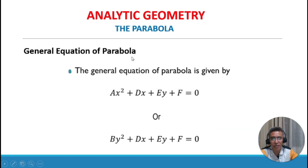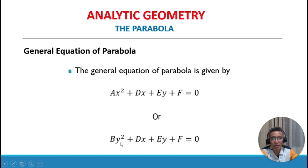The general equation of a parabola is given by ax squared plus dx plus ey plus f equals 0, or by squared plus dx plus ey plus f equals 0.